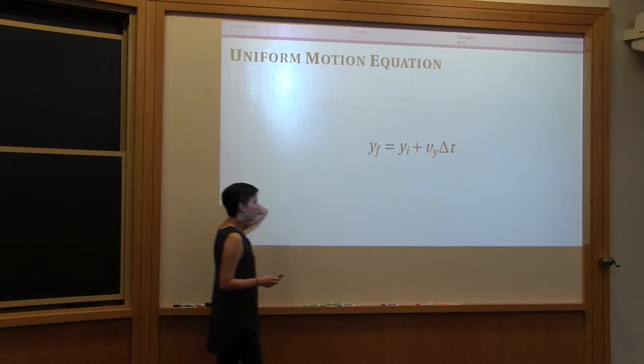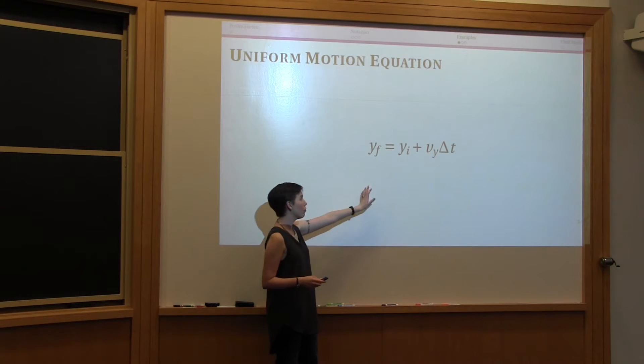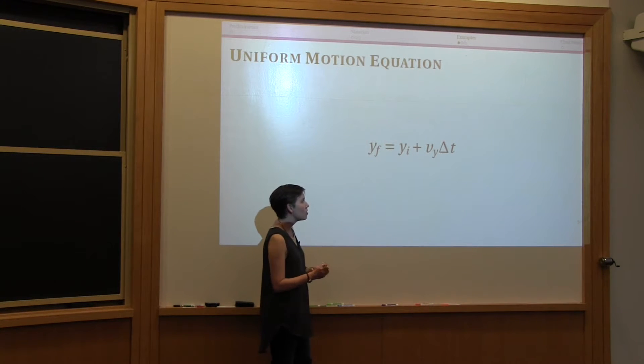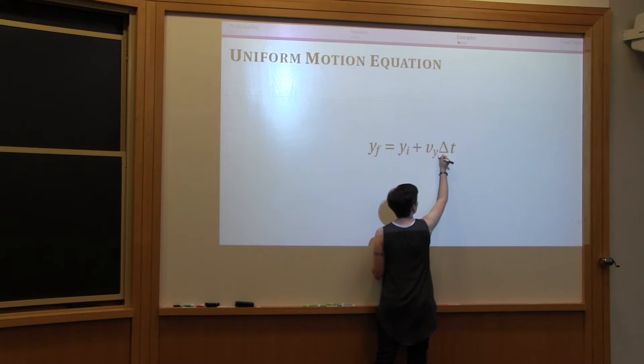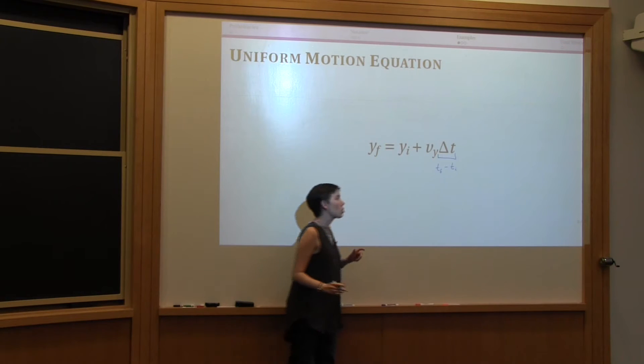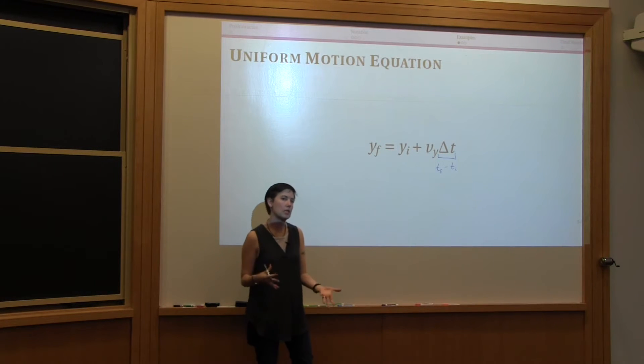This is an equation that is related to uniform motion. You can see that there are a few things happening in it. One is that you see that Greek letter delta that I just talked about. So this quantity here means t final minus t initial. So we're talking about some region in time.